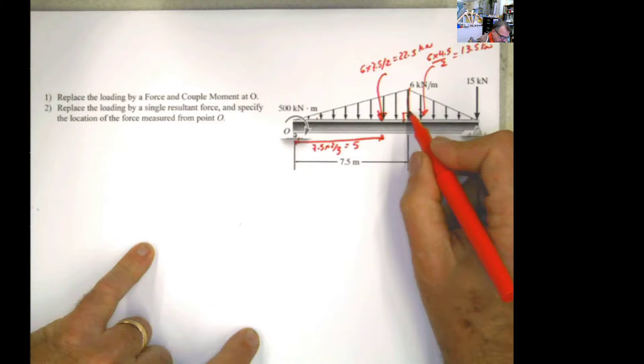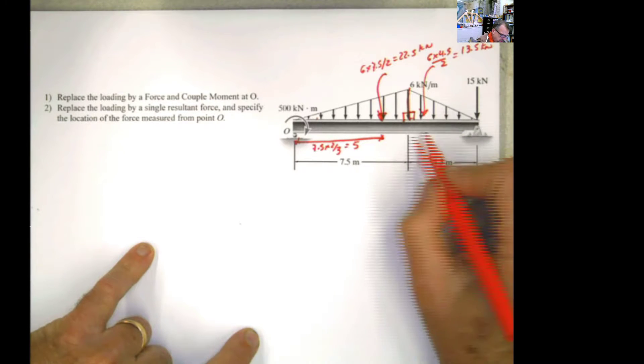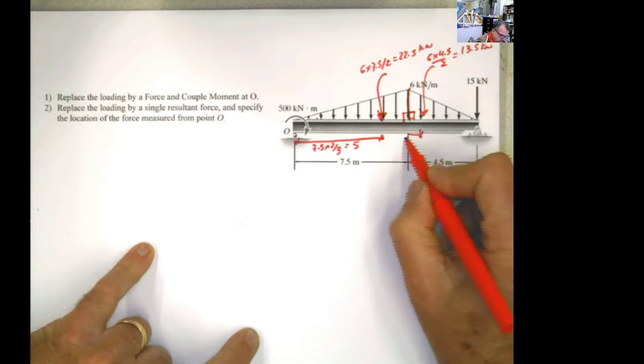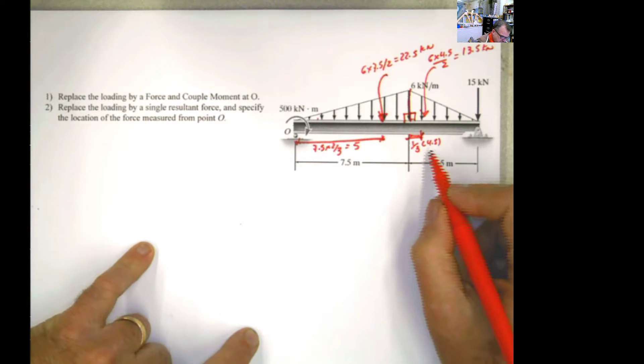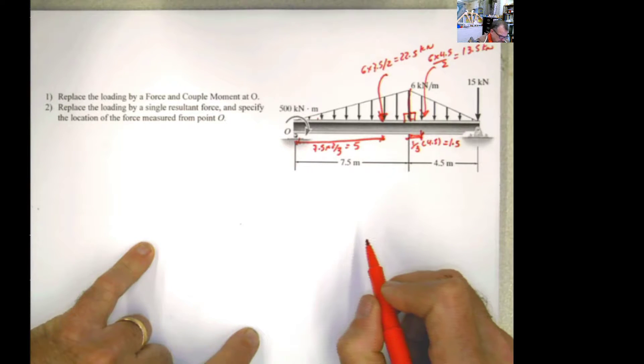For this other one, if I refer it to the right angle, which is this one, it's going to be 1/3. The location is going to be 1/3 of 4.5, and 1/3 of 4.5 is just 1.5 meters.